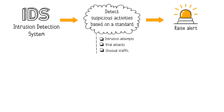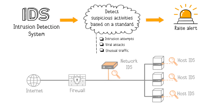IDS records and reports identified issues to help understand threats and enhance global security. The IDS achieves this by monitoring the activities of a target, which can be a network or host machines. Depending on the target, there are two types of IDS.